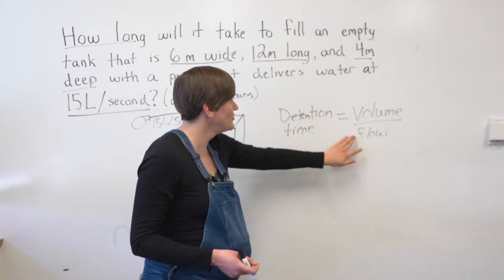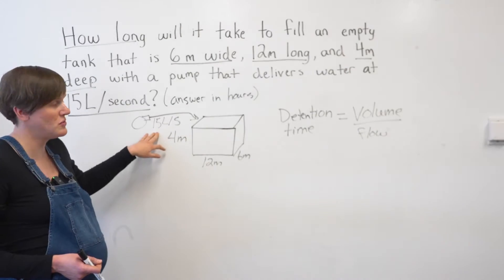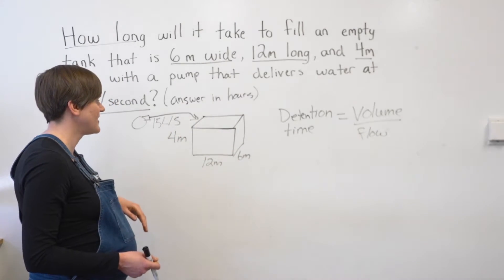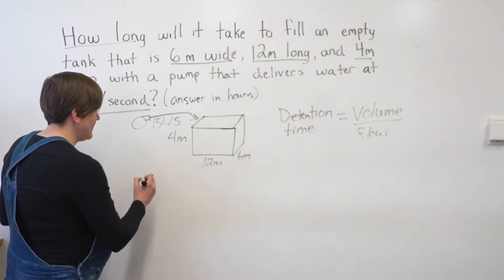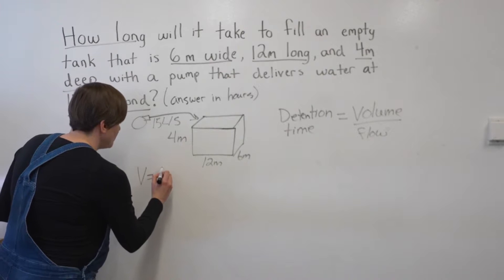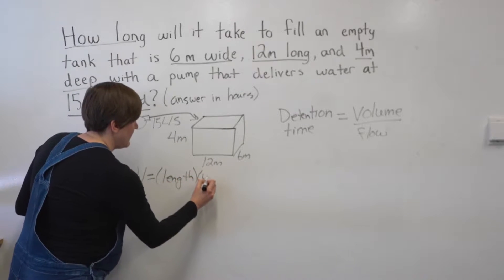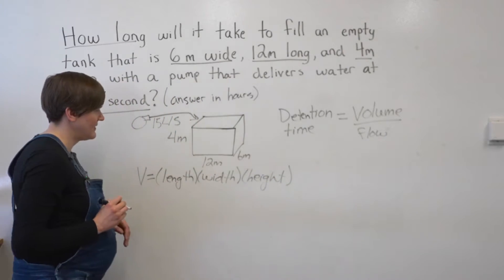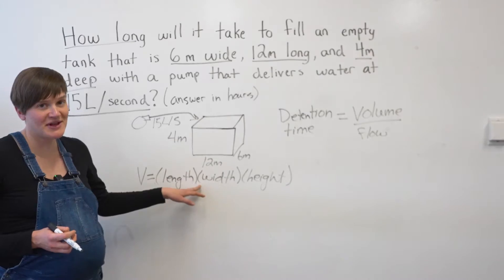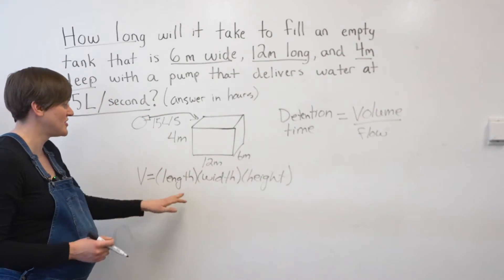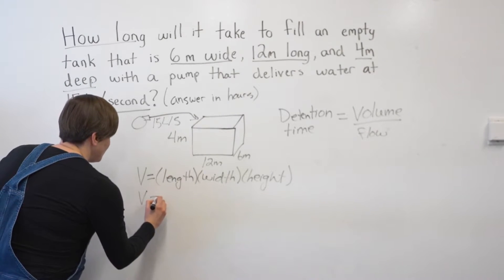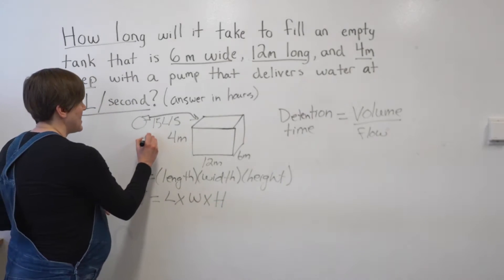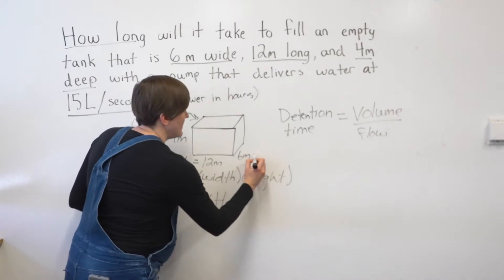So I need a volume and a flow to use in this formula. I do have a flow — 15 liters a second — but I have to calculate the volume of this rectangular tank. From the formula sheet, volume is length times width times height. They don't write the multiplication symbols, but when you've got terms right next to each other, they're being multiplied. So I could rewrite this as volume equals length times width times height. Here, this is my height, this is my length, and this is my width.